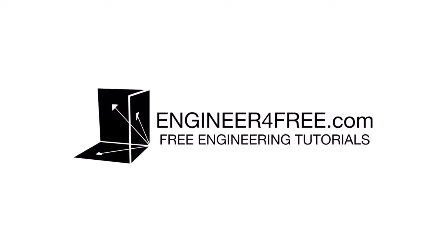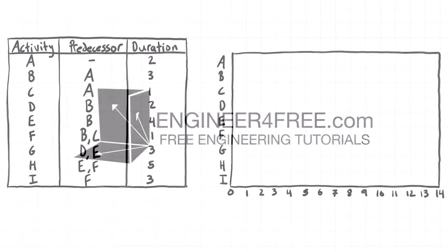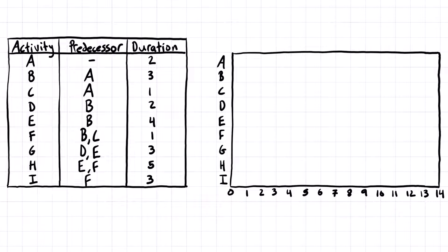All right, welcome back guys. In this video, we're just going to be drawing a Gantt chart from a table of dependencies. If you stick around until the end of the video, I will also link another video where I solve the network diagram and critical path for this exact same project. But for now, we're working on the Gantt chart, and we've been given the table of dependencies.